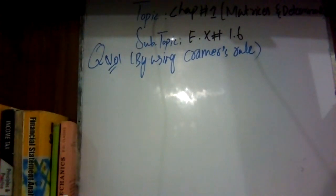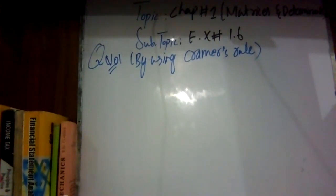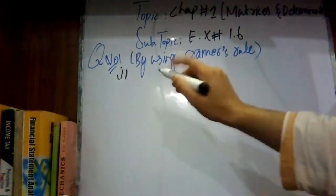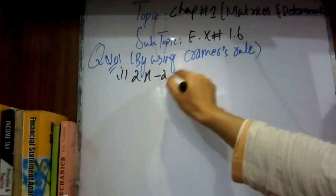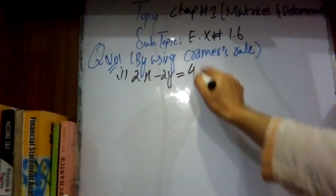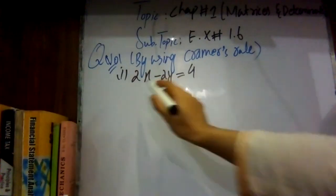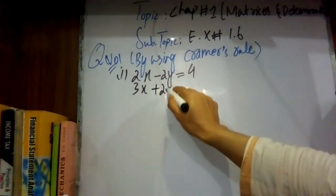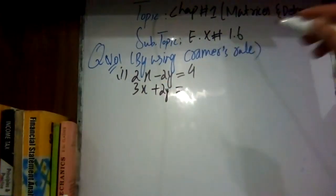Now write down these equations. Question number one, part number one. You have linear equations given: 2x minus 2y equals 4, and the second equation is 3x plus 2y equals 6.